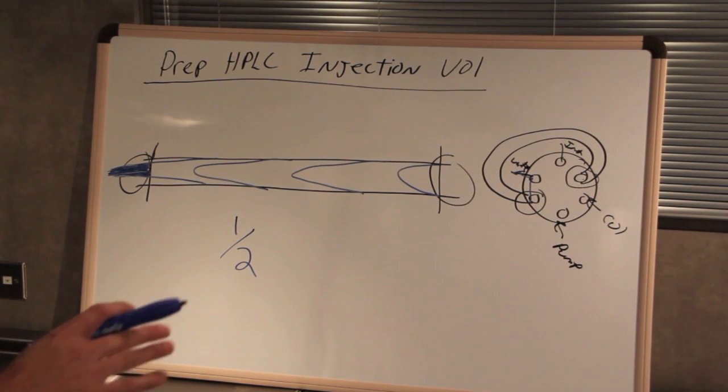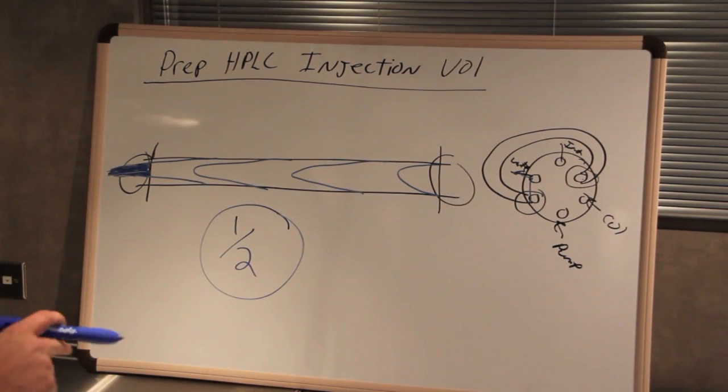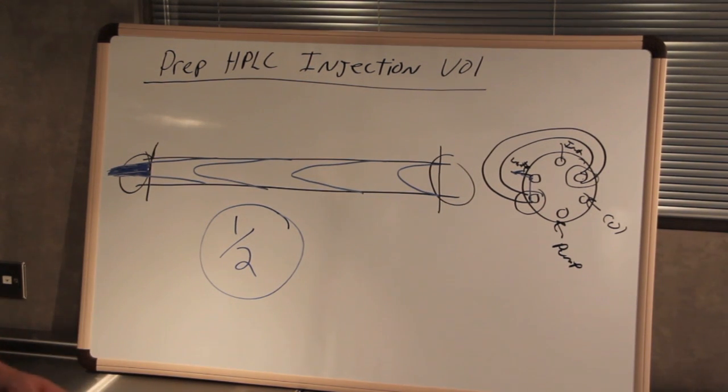So if total recovery is important to you, make sure that you do not inject more than one half the volume of your sample loop onto your HPLC column.